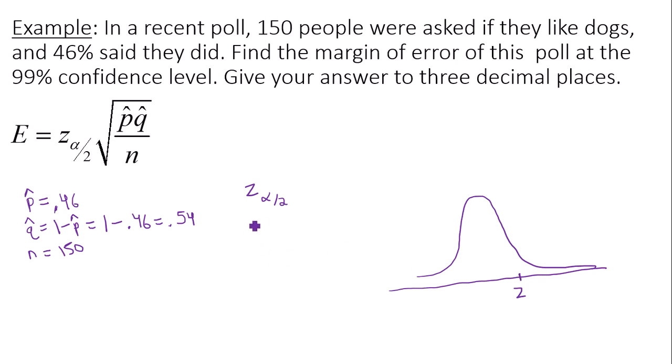What is alpha over 2? Well, alpha is always 1 minus the confidence level, 1 minus 0.99 in this case, which is 0.01, which means alpha over 2, or 0.01 divided by 2, is going to be 0.005.